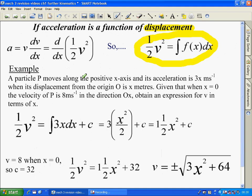OK, so we have a particle moving along the positive x-axis, acceleration of 3x. When x is 0, velocity of P is 8, so that gives us the initial conditions. Get an expression for v in terms of x. So we know half v squared from this equation here is equal to the integral of f of x dx.